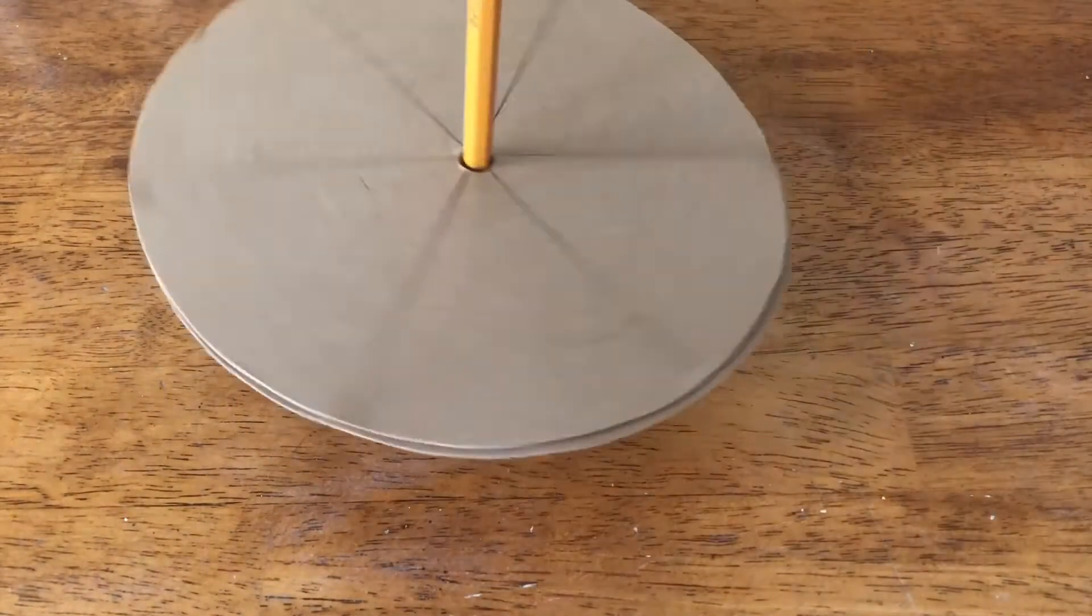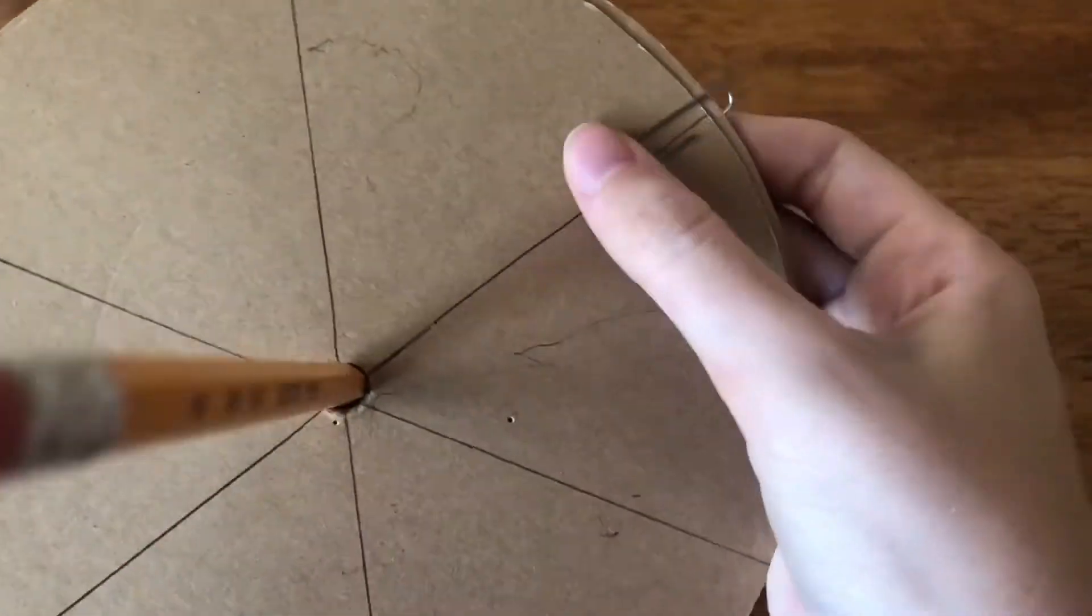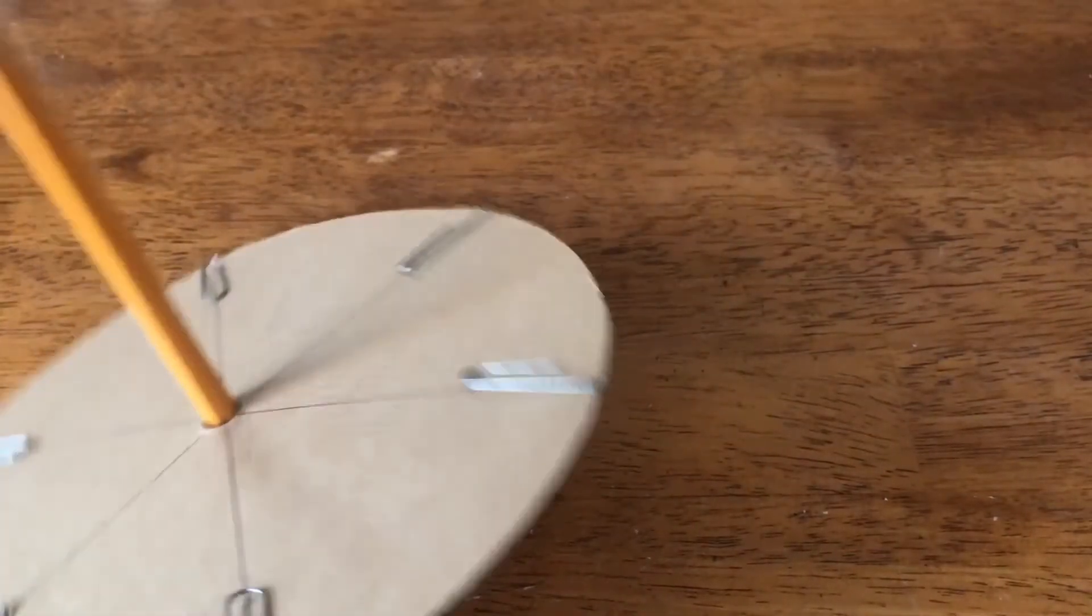The students should now try to spin the pencil and note how long it spins until it falls over. Now they should add mass to the top by placing a paperclip over each line on the circle. They should try to spin the top now and note the length of time it continues to spin.